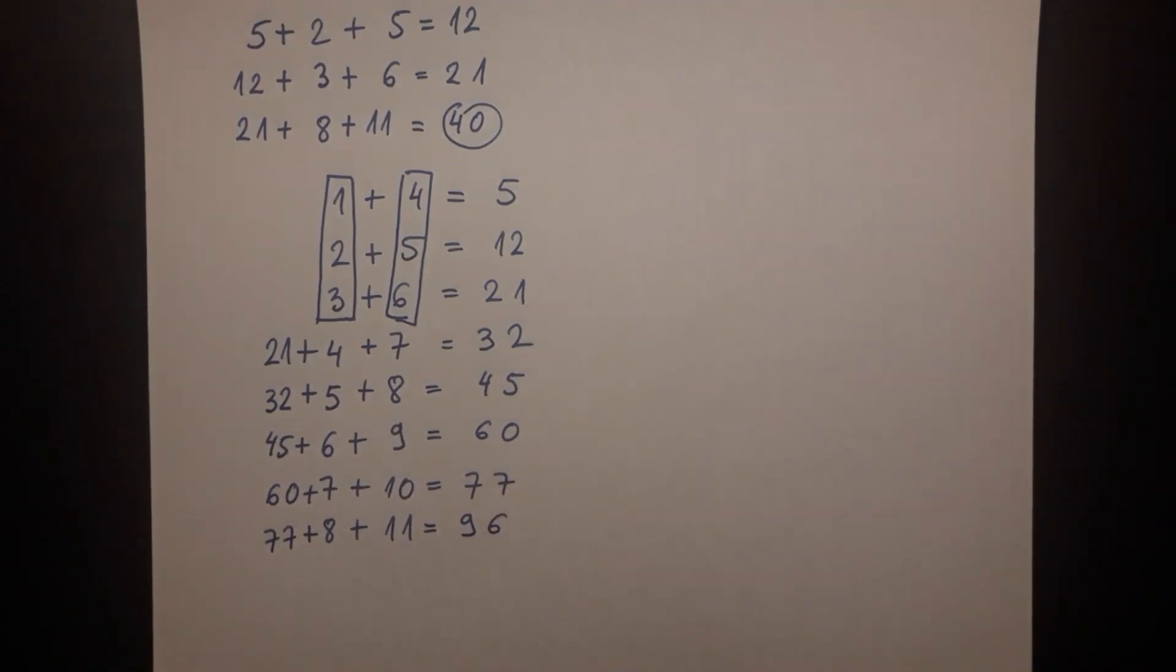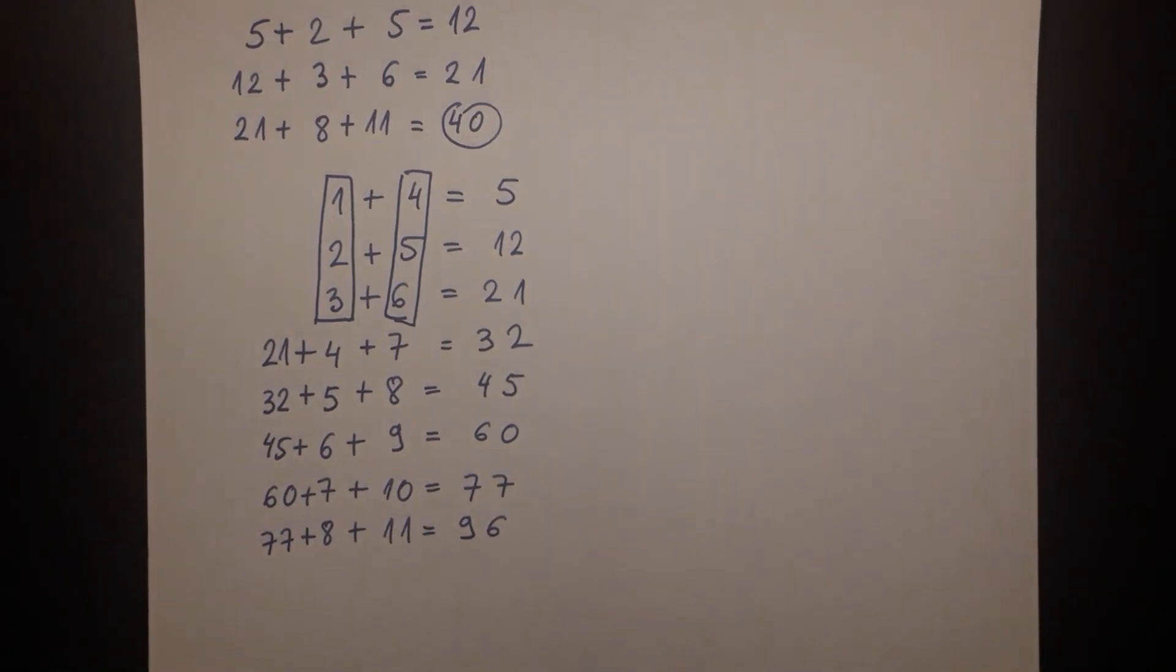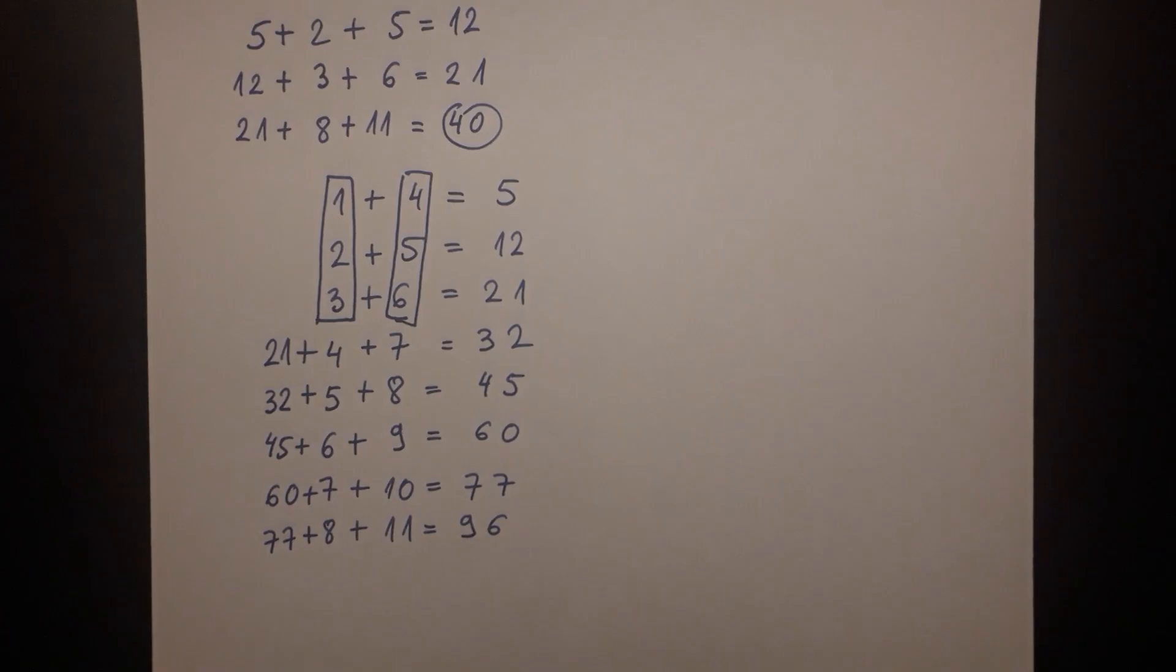This is interesting because under this interpretation, we again get to the answer of 96. We were only required to adjust the running total by putting in some of these missing lines, which were omitted from the original problem.